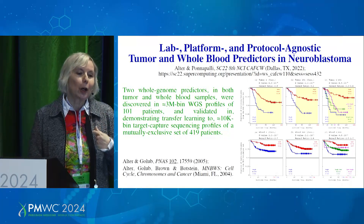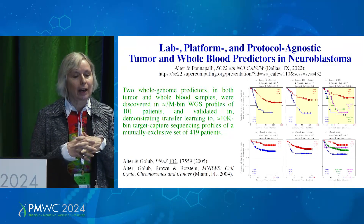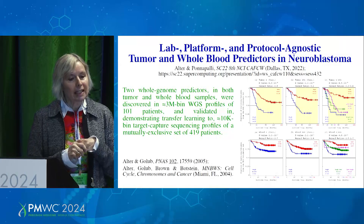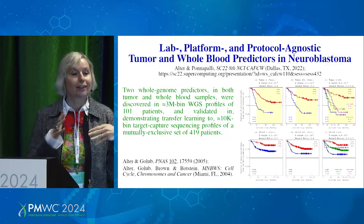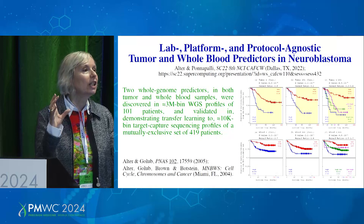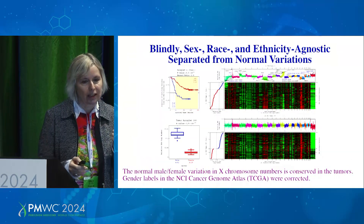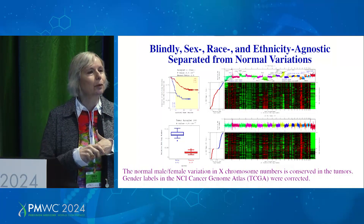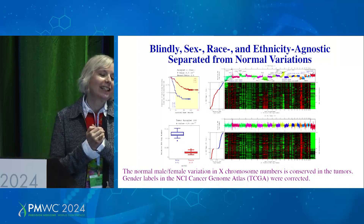We found two predictors in pediatric neuroblastoma, both in tumor and whole blood samples. The discovery was in whole genome data from just 101 patients, and the validation demonstrated transfer learning that is lab platform and protocol agnostic — just like all our work — using target capture sequencing looking at less than 1% of the whole genome from just about 400 patients. All of these predictors — and we are a prism, so the predictors are patterns that we find in the data — we are separating them from other data patterns, as was discussed earlier in the session.